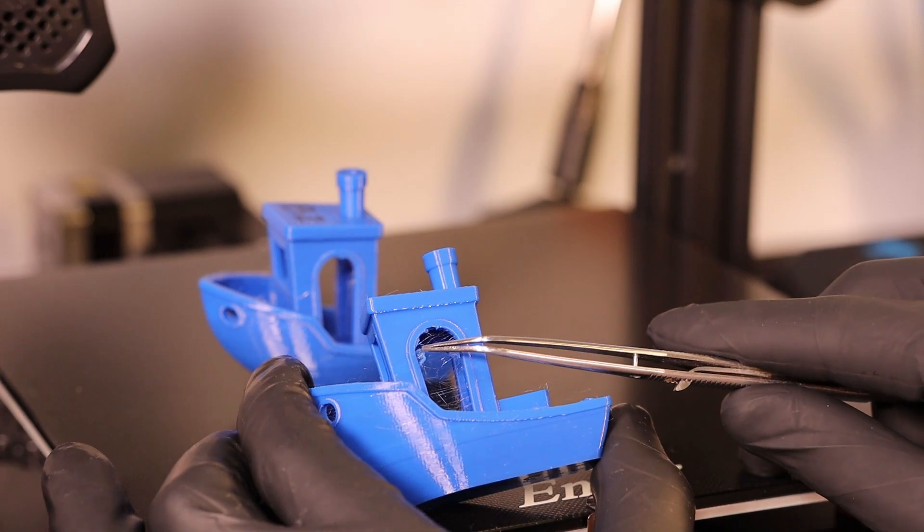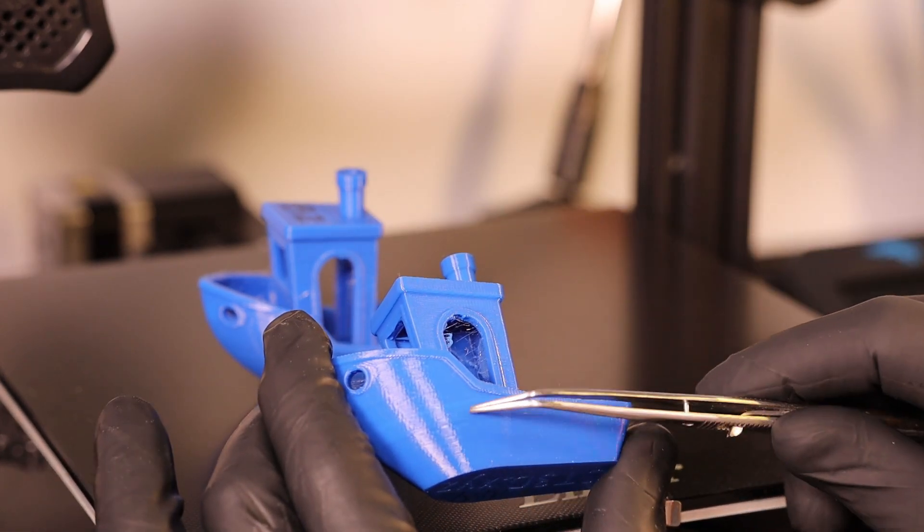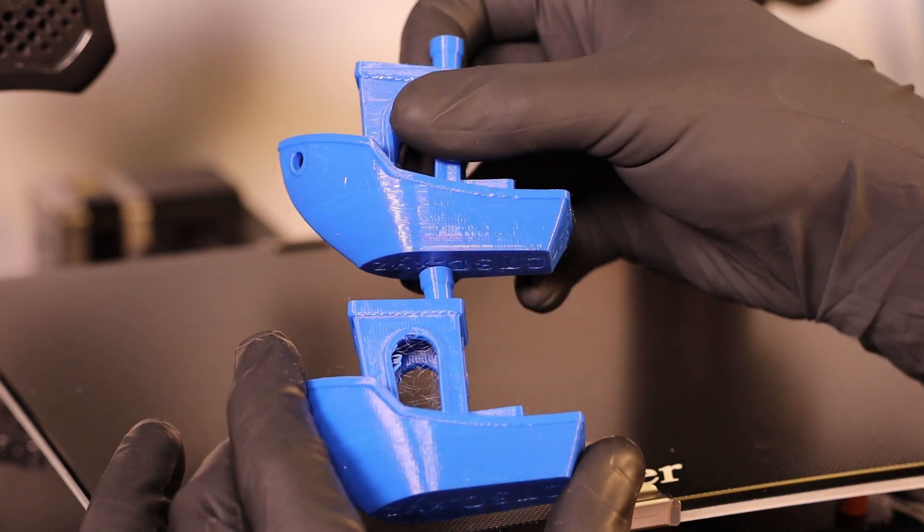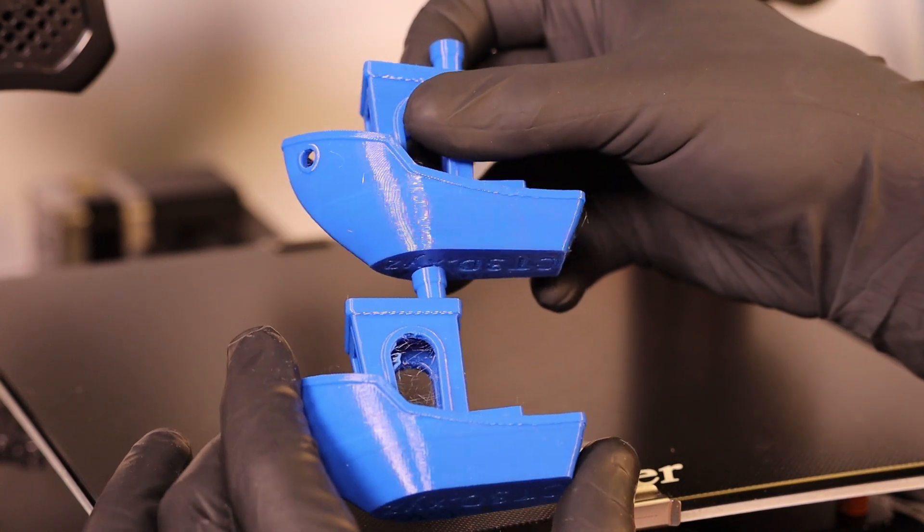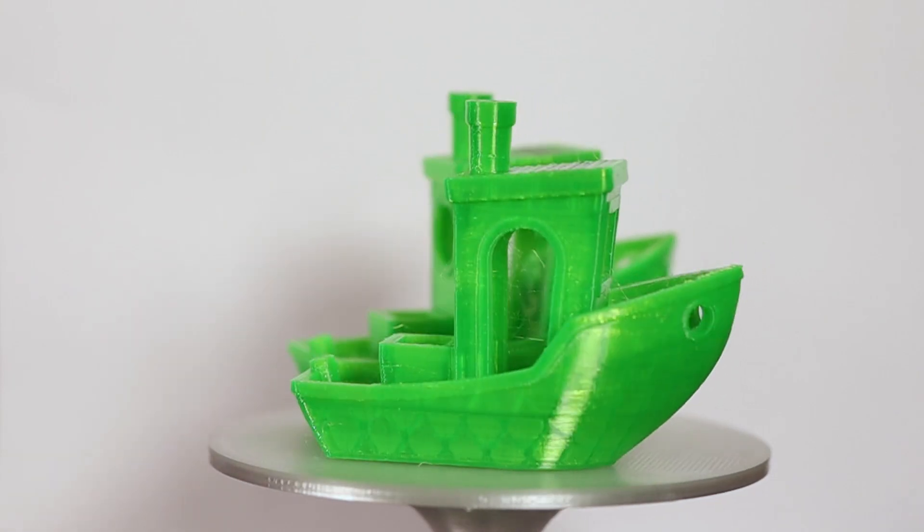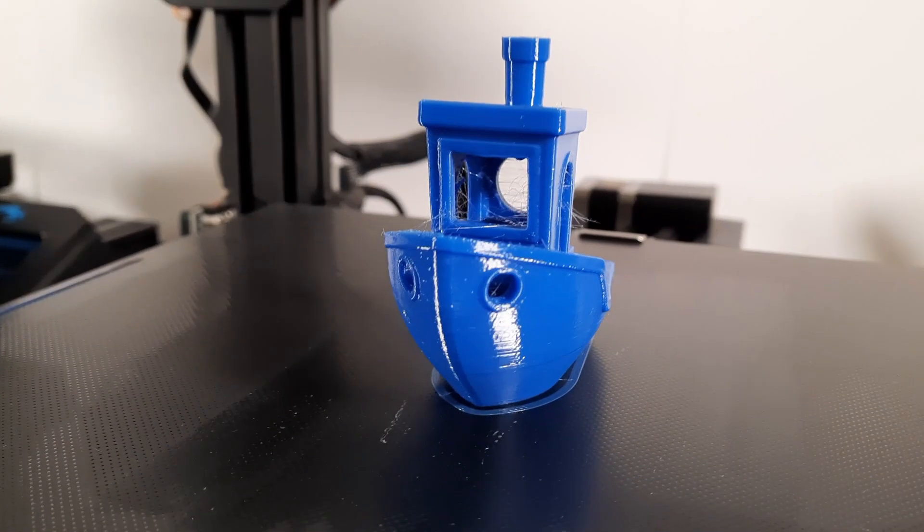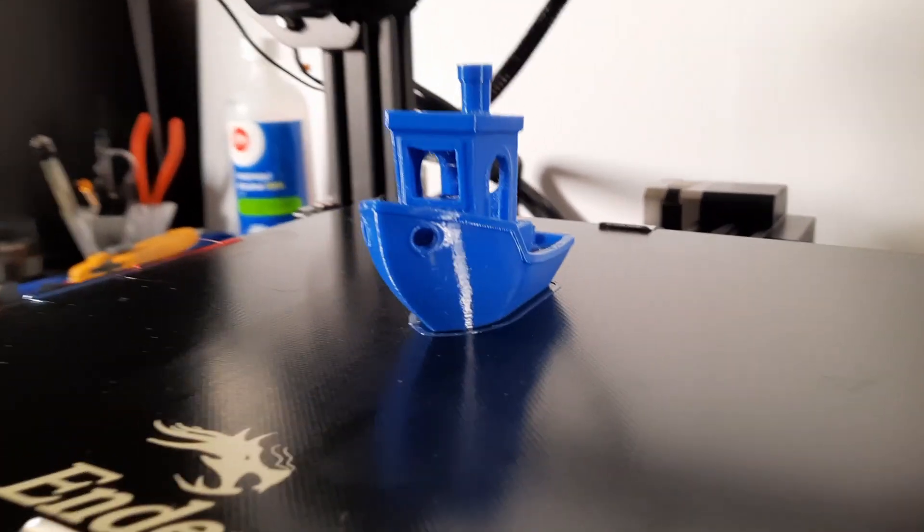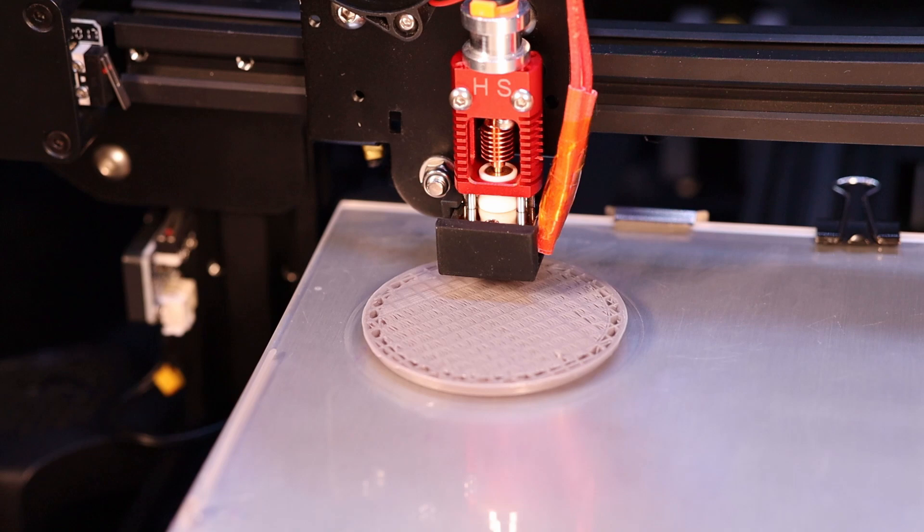Last video we compared my well-used Ender 3 V2 with more than 700 successful prints to this new printer with no prints on it. I was pretty impressed with how well the printer performed considering it's printed for about 35% of a year. My goal with this printer is to get it set up to print as close to the new printer as possible so we can use them both for testing and improvements.